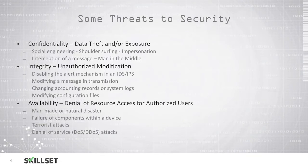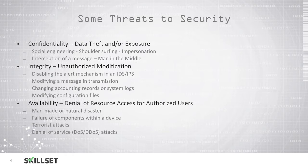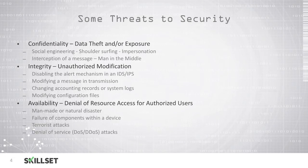Here are some examples of threats that can negatively impact our organization's computer security. A threat to our confidentiality would be a data exposure or the theft of confidential data. Social engineering is very popular, where we trick an employee into providing information the attacker should not have. Shoulder surfing is where an individual looks over a person's shoulder to capture their password or sensitive data. We also have impersonation attacks, where a person pretends to be an authorized user, and man-in-the-middle attacks, where a person places themselves between two communicating individuals to capture or modify that data.